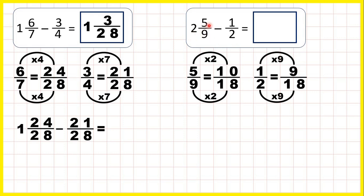So instead of 2 and 5 9ths, we can rewrite our question as 2 and 10 18ths, and instead of subtracting 1 half, we can subtract 9 18ths. Now we always subtract the fractions first. So 10 18ths minus 9 18ths is 1 18th, and 2 minus nothing is 2. So our answer is 2 and 1 18th.